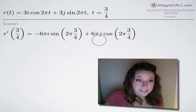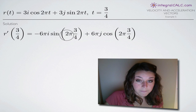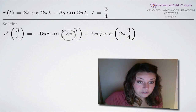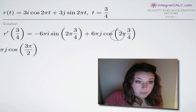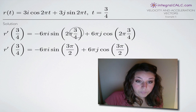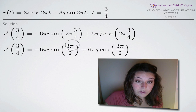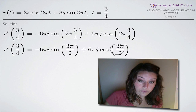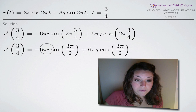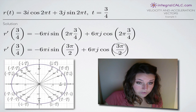Now we can plug in t equals 3 fourths and evaluate to get our velocity vector. Plugging in 3 fourths for t, we get 2 pi times 3 fourths which gives us 6 over 4, the same as 3 over 2. So we end up with 3 pi over 2 inside both sine and cosine. To evaluate sine of 3 pi over 2 and cosine of 3 pi over 2, we'll need our unit circle.